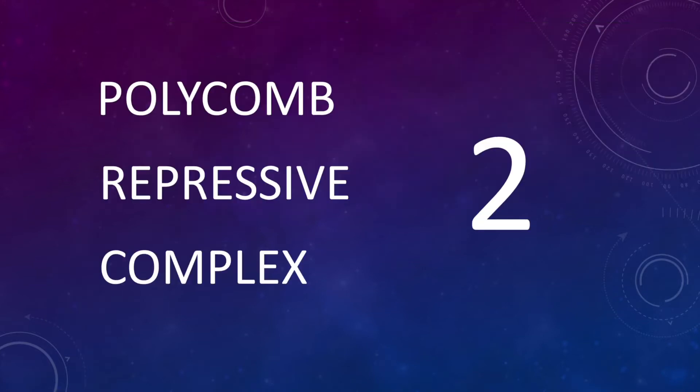The enzyme polycomb repressive complex II is a known genetic silencer that is vital to cell differentiation and development.